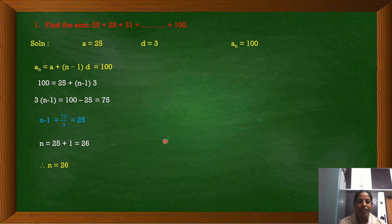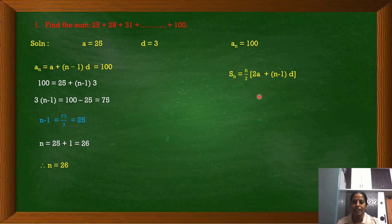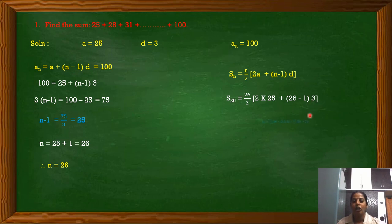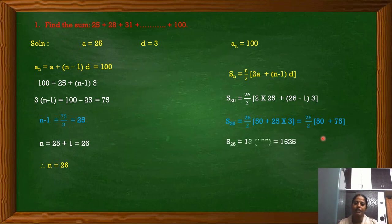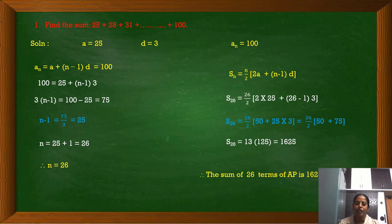Now we know a, d, and n, so we can easily calculate the sum up to 26 terms. Substituting the value of n as 26 by 2 into 2 times 25 plus 25 times 3: that is 50 plus 75 equals 125. Half of 26 is 13. Multiplying 125 and 13 we get 1625. Therefore the sum of 26 terms of the AP is 1625.